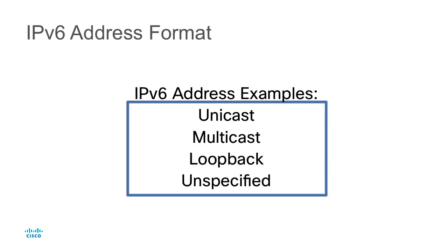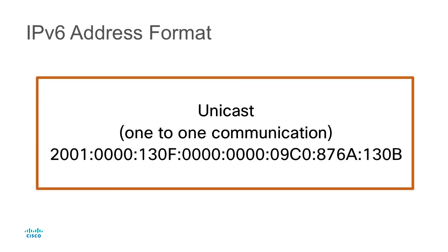Let's take a look at an IPv6 address example. As you'll learn with IPv6, there are multiple address types. One of the most common is unicast, which is used for one-to-one communication. In this example we have an IPv6 unicast address: 2001:0000:130F:0000:0000:09C0:876A:130B. When you hear that address, you're thinking that's pretty hard to remember — it's not like you can ask somebody to ping your address at 192.168.1.1. An IPv6 address is a mouthful, so we can abbreviate and simplify it.